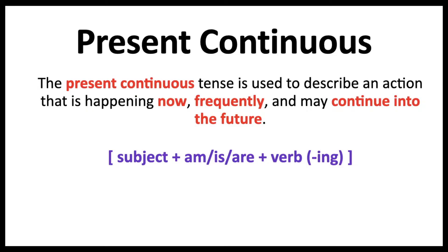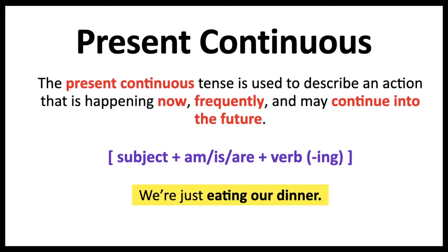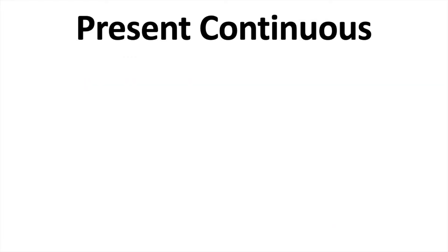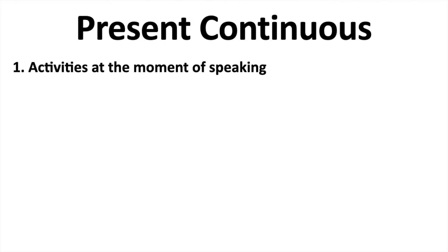For example: 'We're just eating our dinner.' 'I'm just leaving work.' The present continuous tense is used to talk about activities at the moment of speaking. For example, 'I'm just leaving work.'